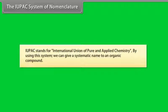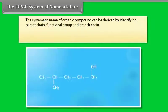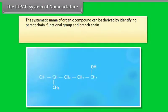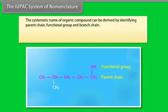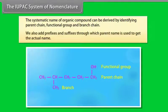The IUPAC system of nomenclature. IUPAC stands for International Union of Pure and Applied Chemistry. Using this system, we can give a systematic name to an organic compound. The systematic name is derived by identifying the parent chain, functional group, and branch chain. Prefixes and suffixes are added to the parent name to get the actual name.